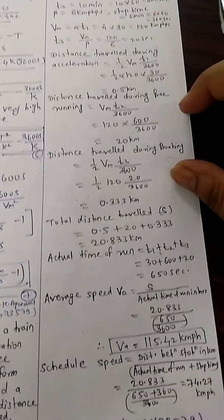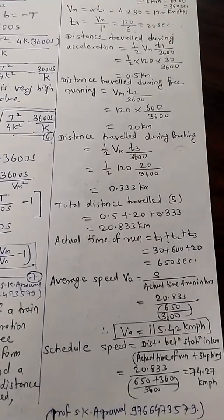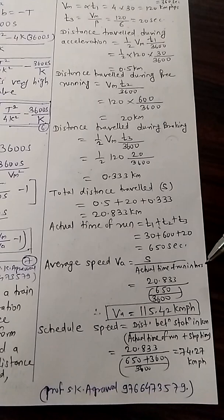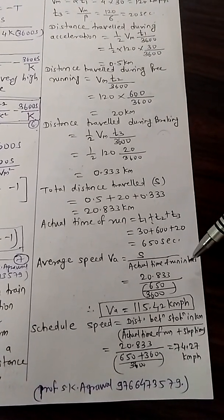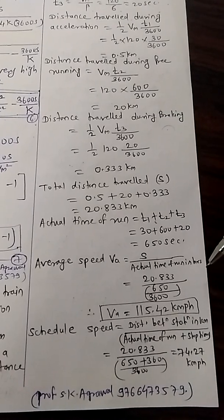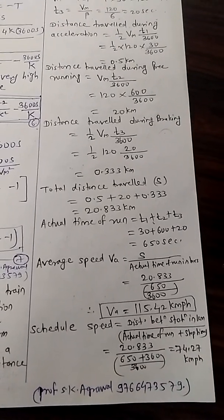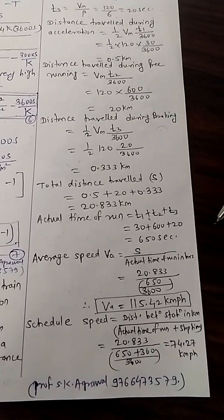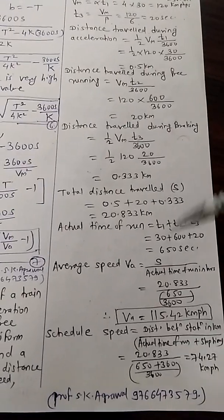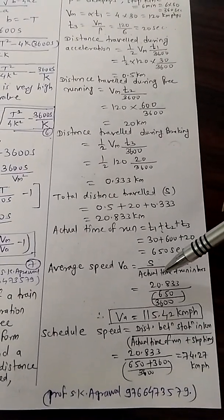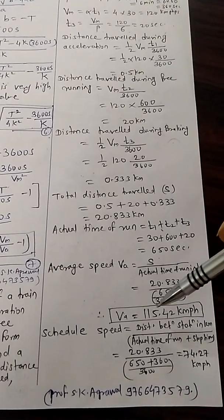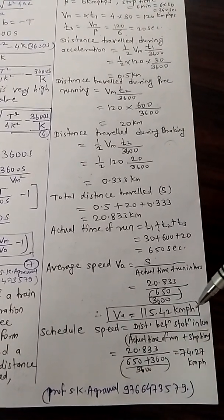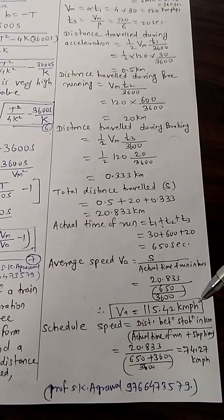And average speed, you know how average speed is calculated. S upon actual time of run in hours. Total distance upon actual time of run in hours. Once you calculate this you will get 115.42 kmph, km per hour.